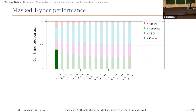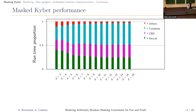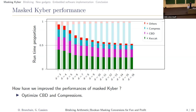Looking at how all these components influence the runtime of a masked Kyber implementation: on the x-axis is the number of shares, on the y-axis is the proportion of runtime. The components are Keccak, CBD sampling, polynomial compression (including comparison), and others. Our work focuses on optimizing arithmetic-to-Boolean conversion to reduce the CBD and compression parts. We have significantly reduced the cost of compression and CBD through optimized masking conversion techniques using bit slicing.